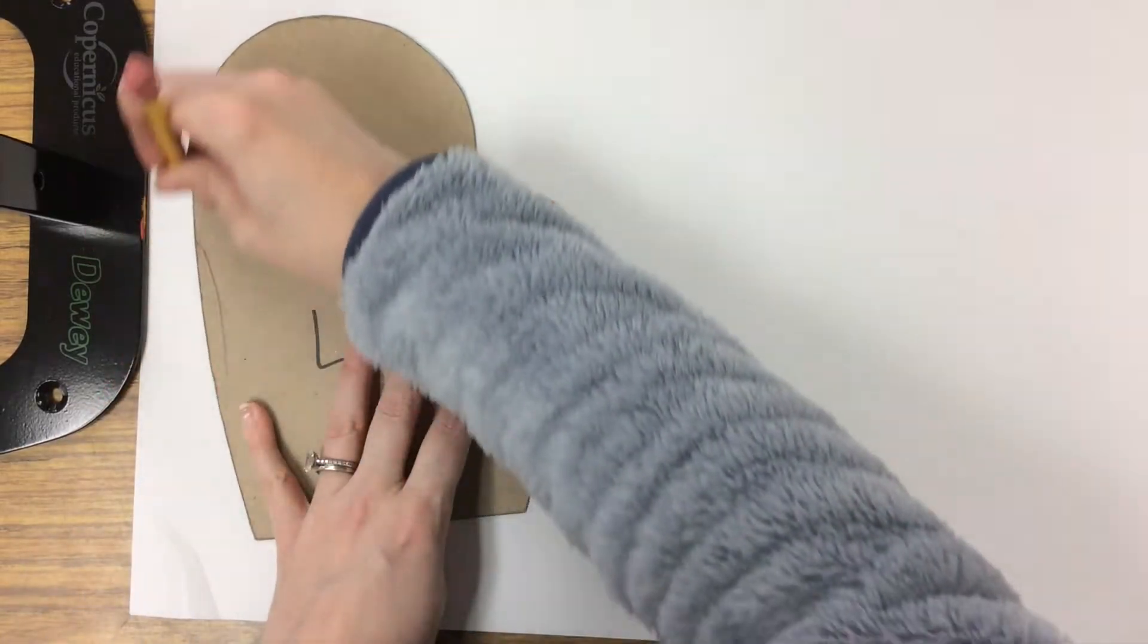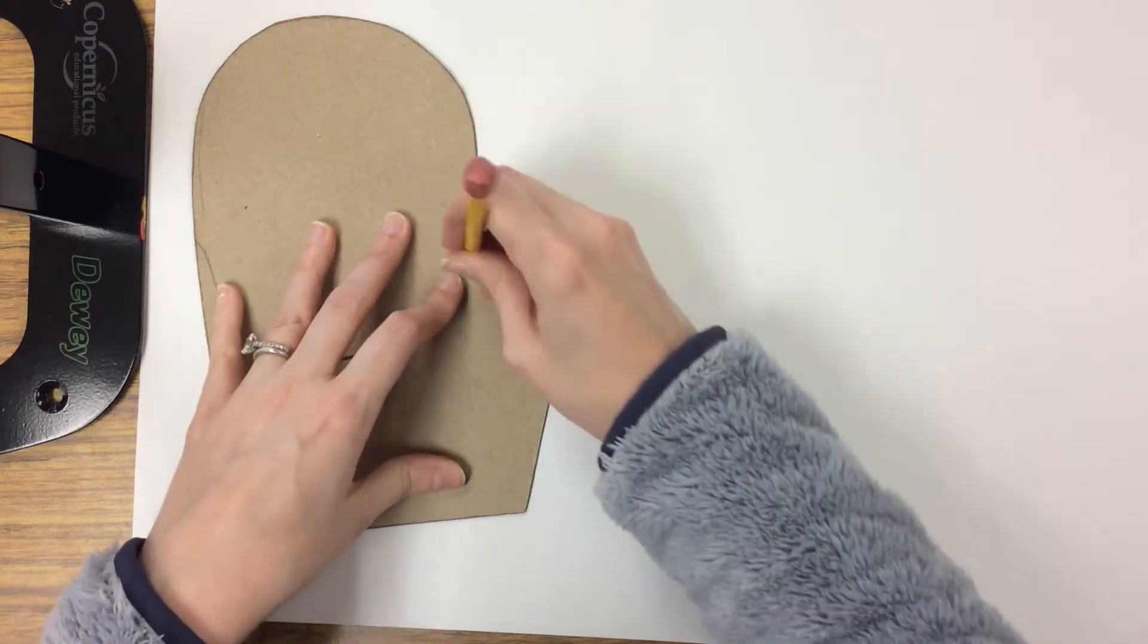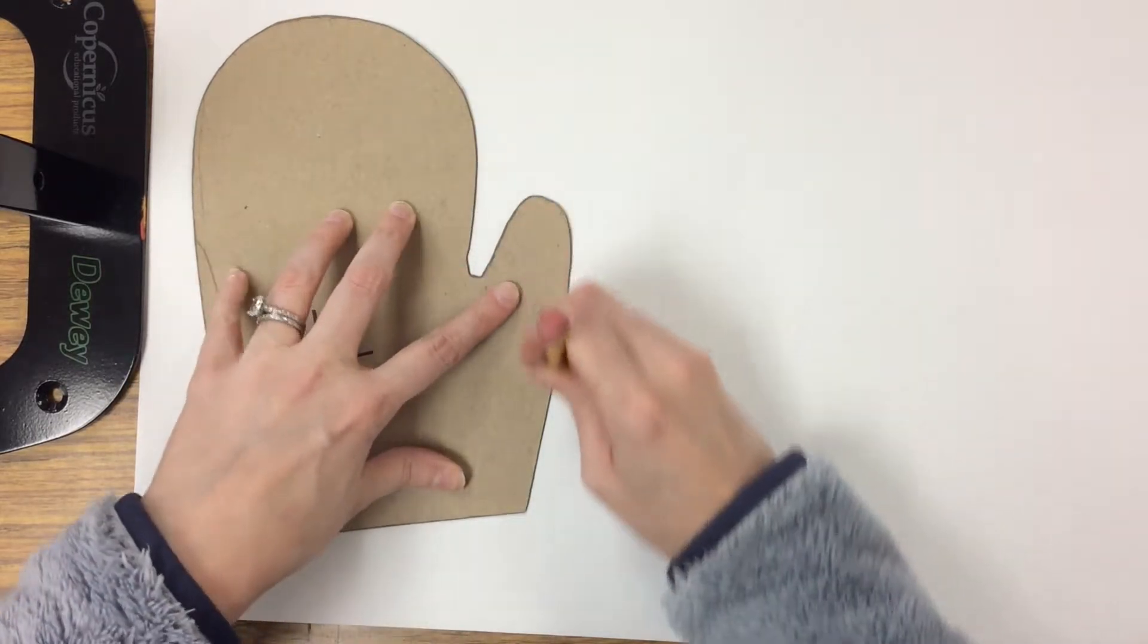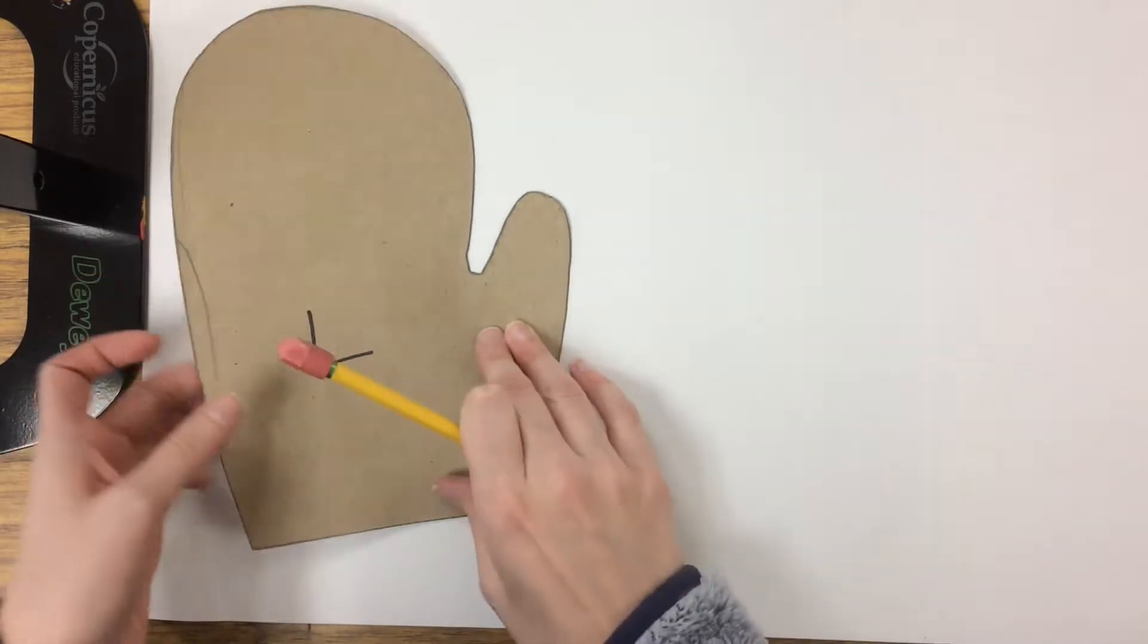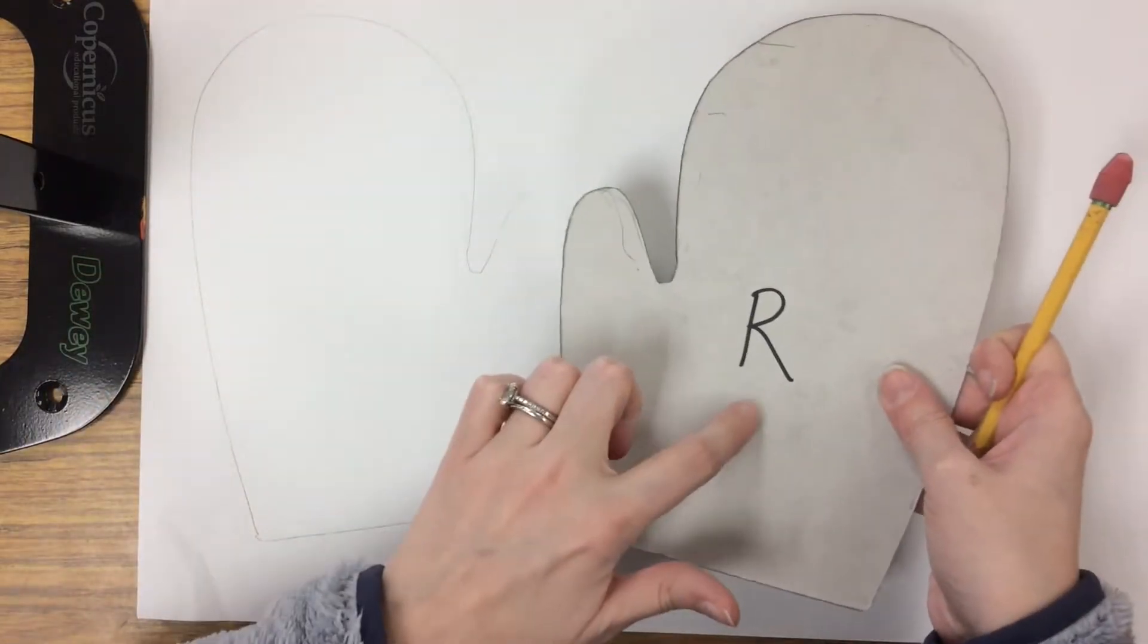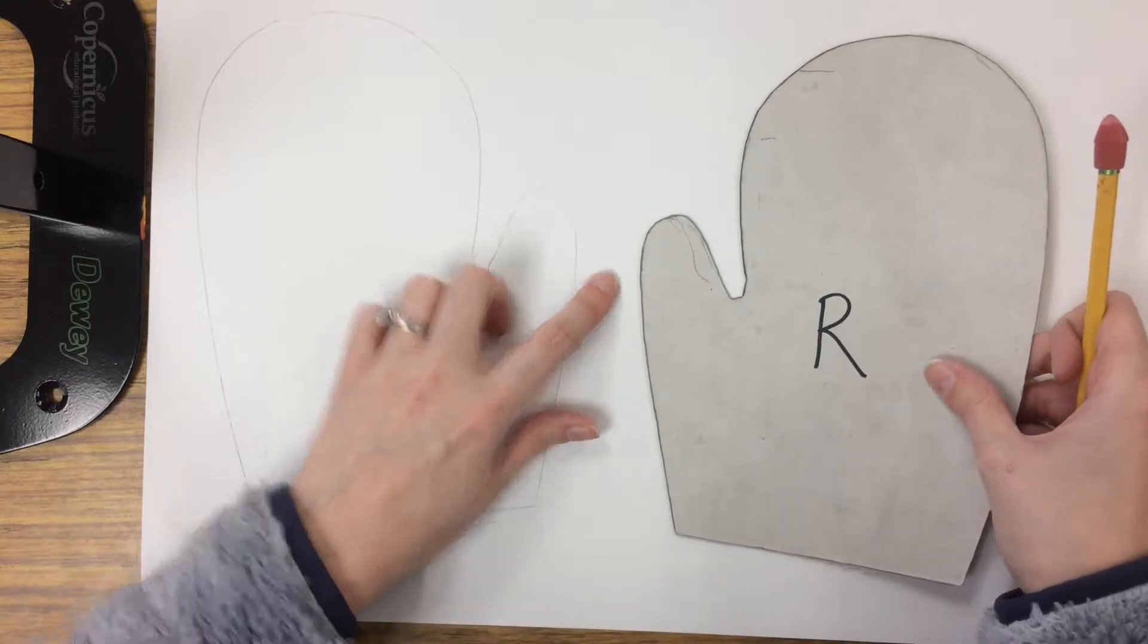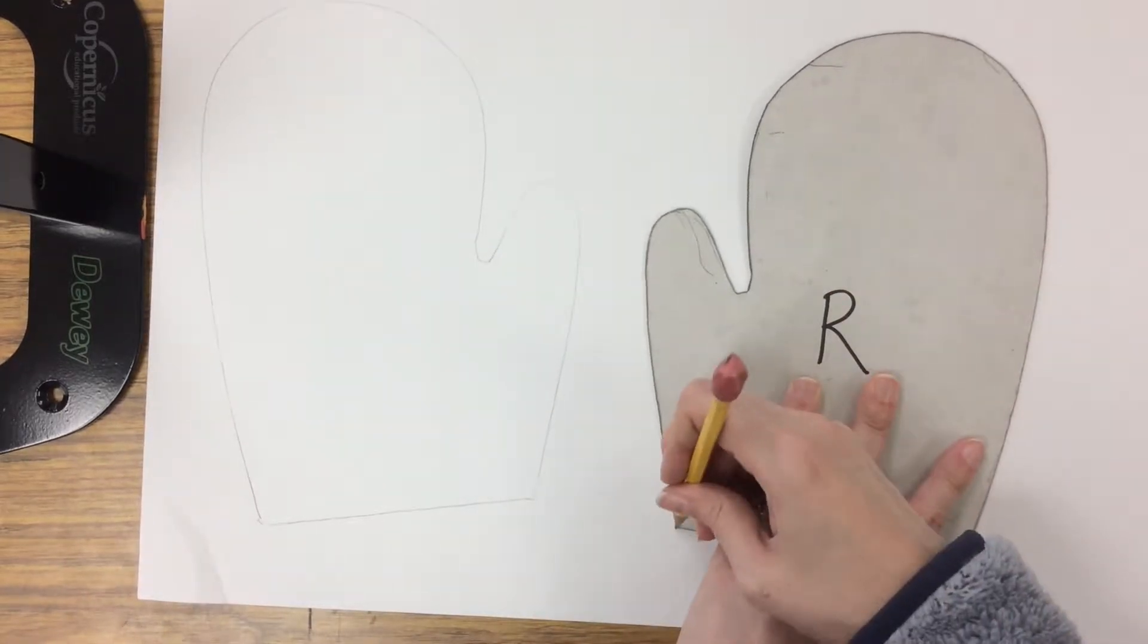I'm going to hold it, slowly trace around it, and to make my right mitten, I'm going to flip it to the R side, leave a little bit of space in between, and trace it again.